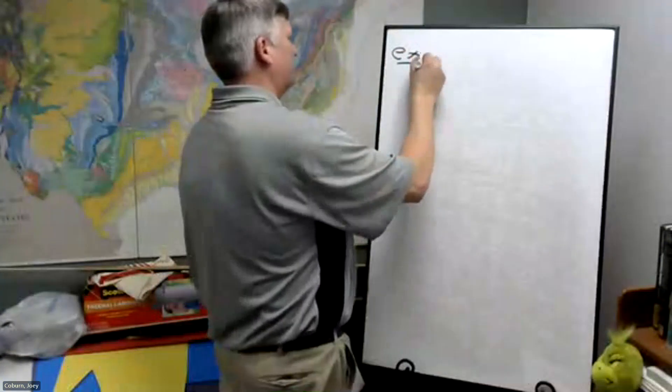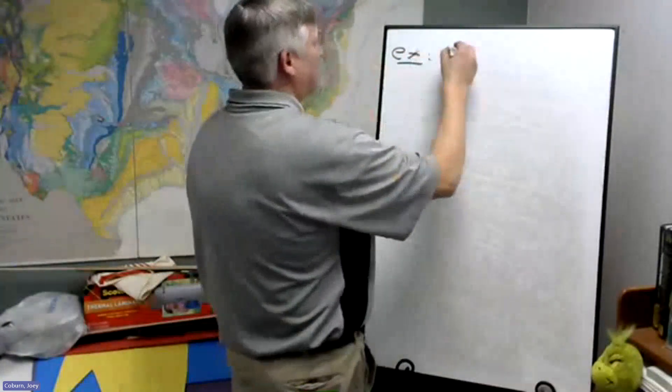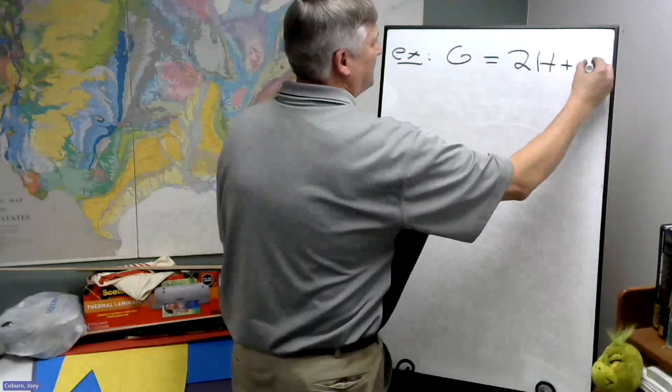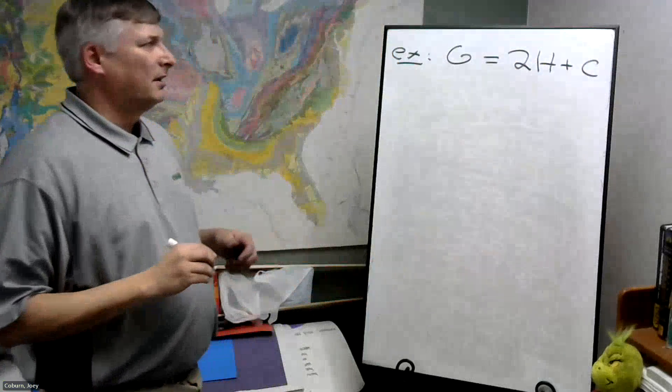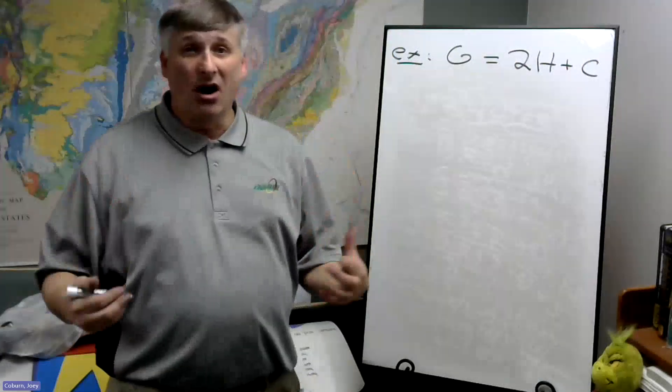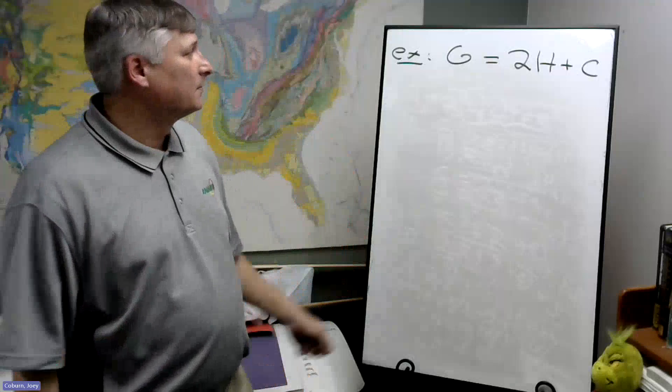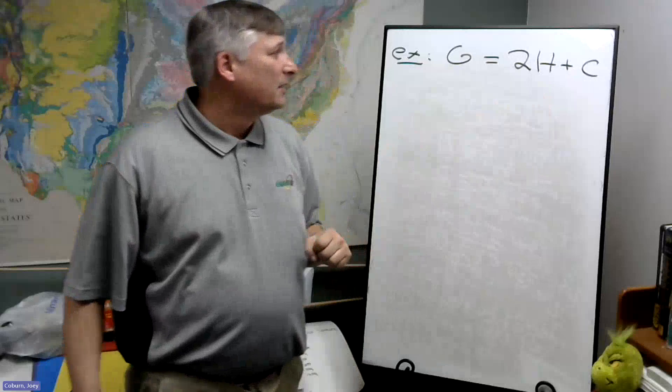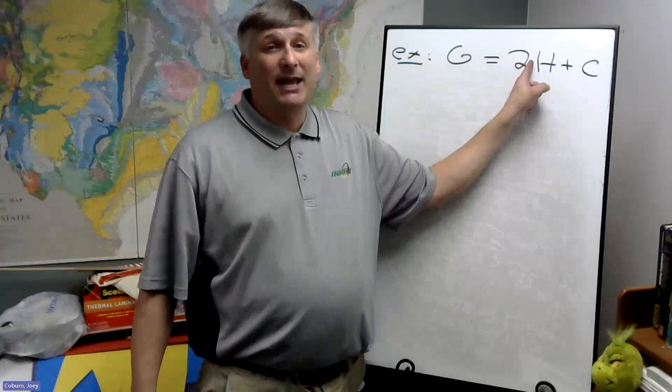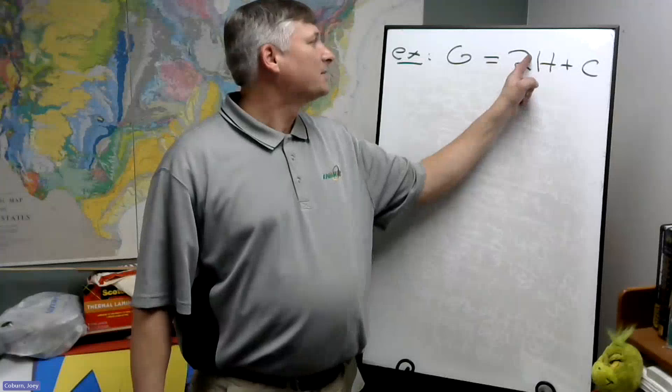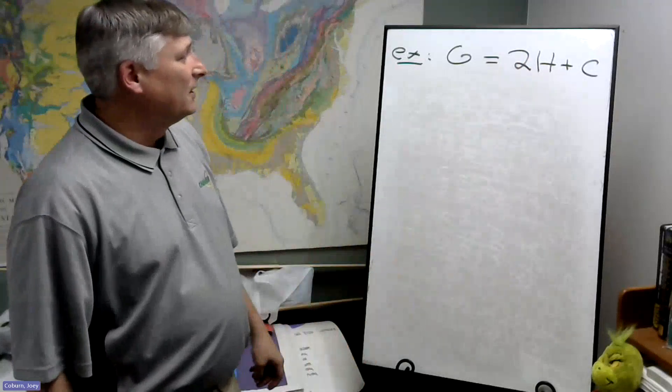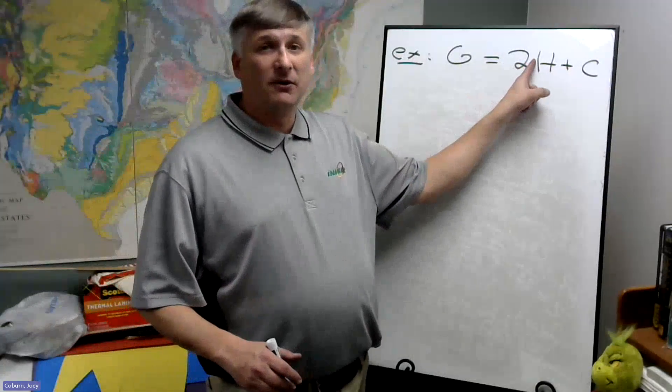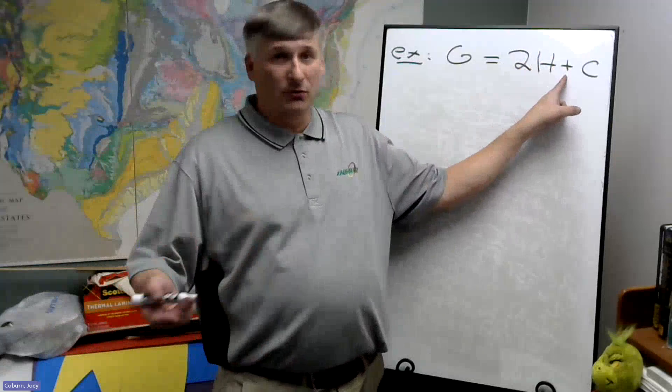Suppose we have G equals 2H plus C. This is an exercise in recalling the language of algebra. There's a number next to a letter or variable, so that means there's an invisible multiplication sign. This is 2 times H. Now we want to follow the order of operations. Recall that we always do multiplication first before we do addition or subtraction.